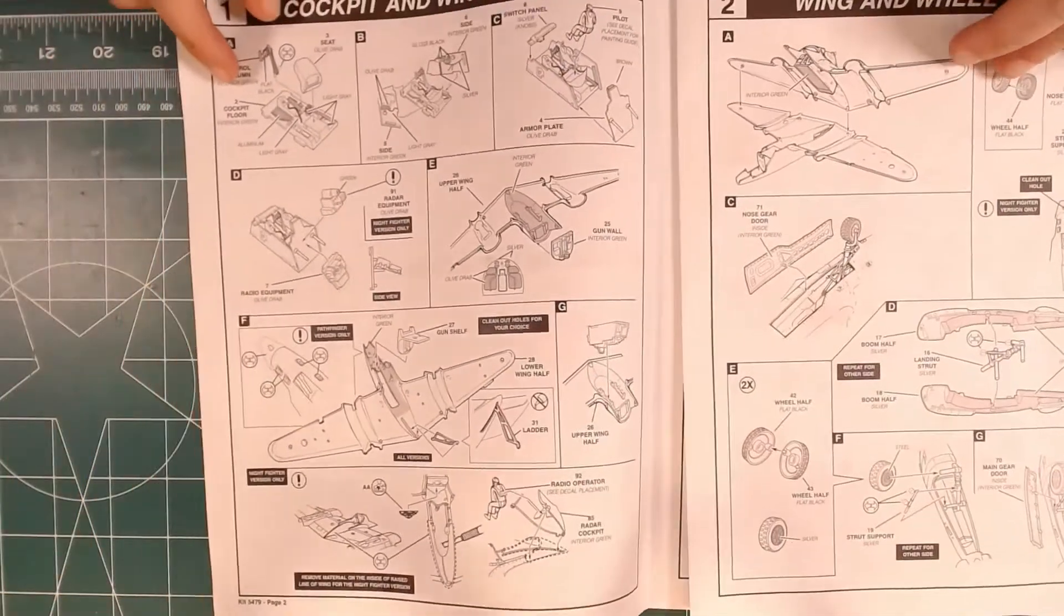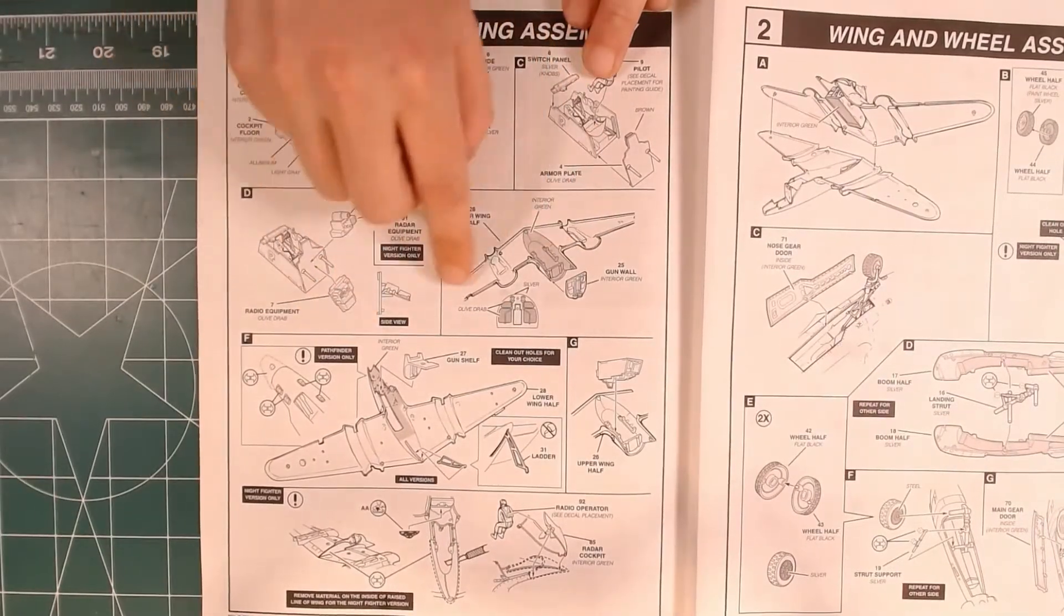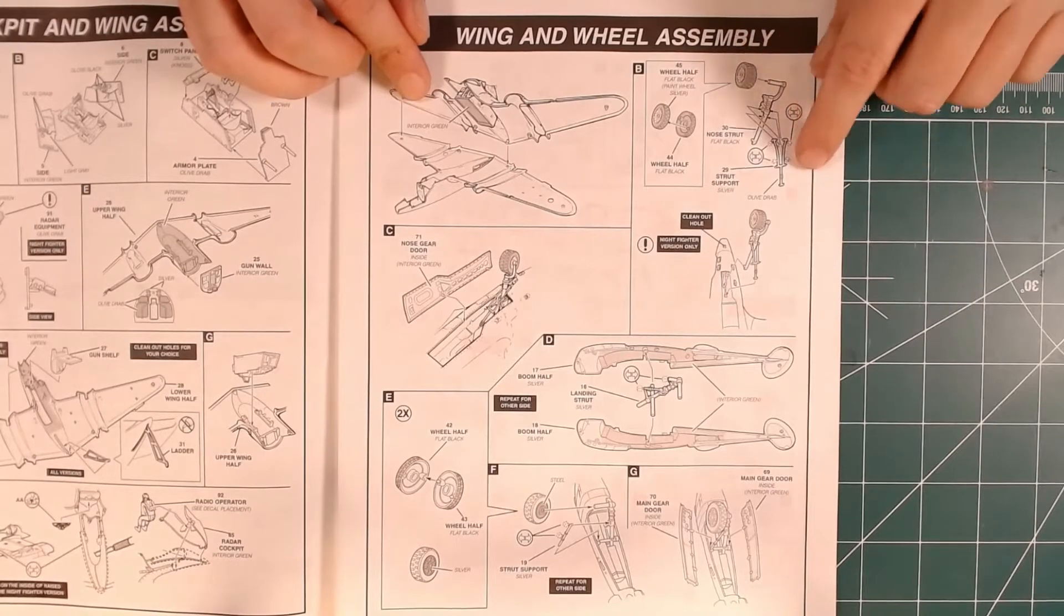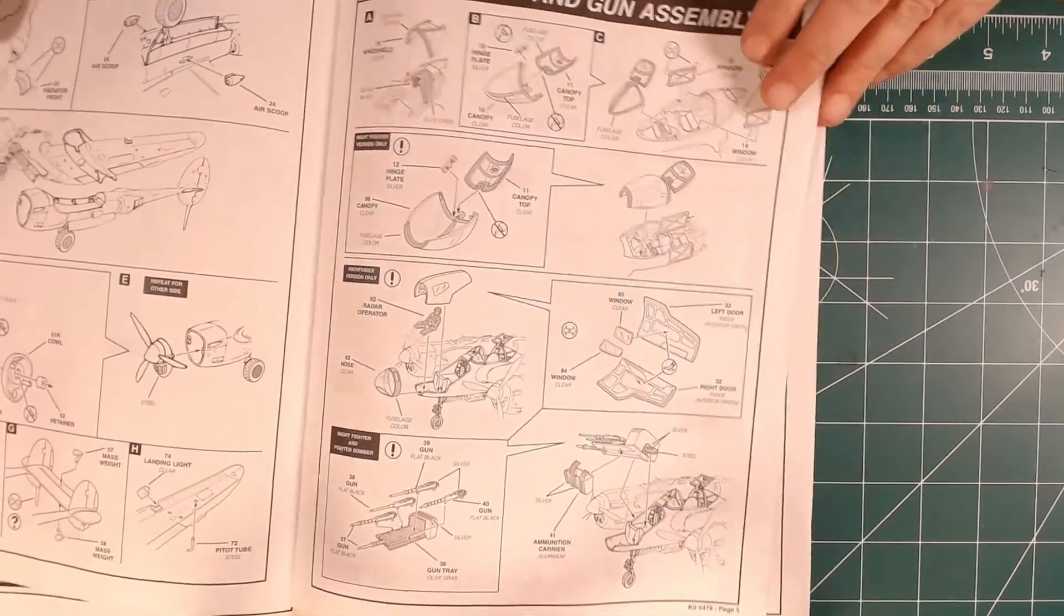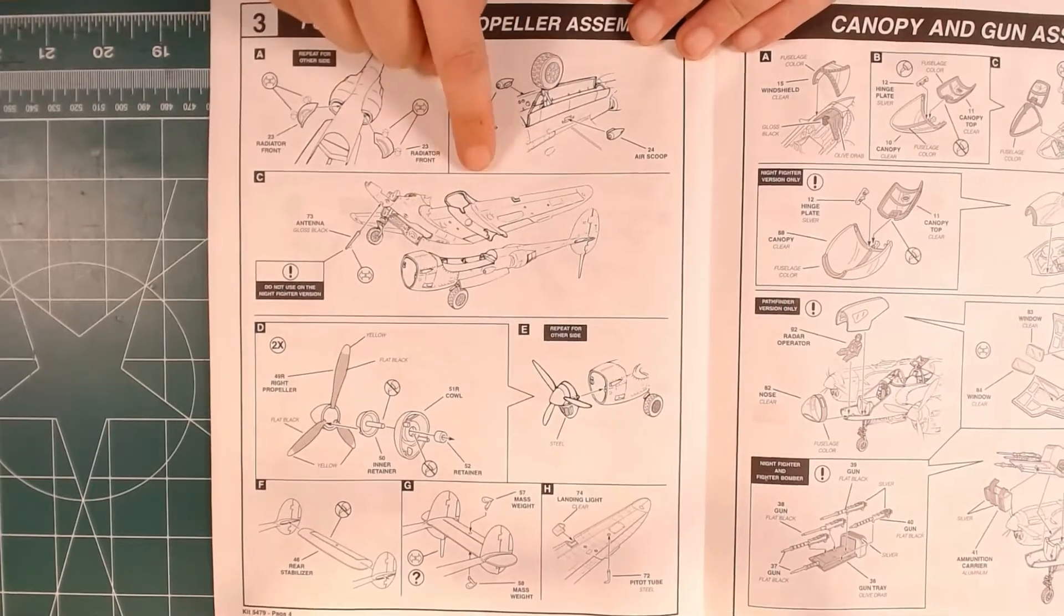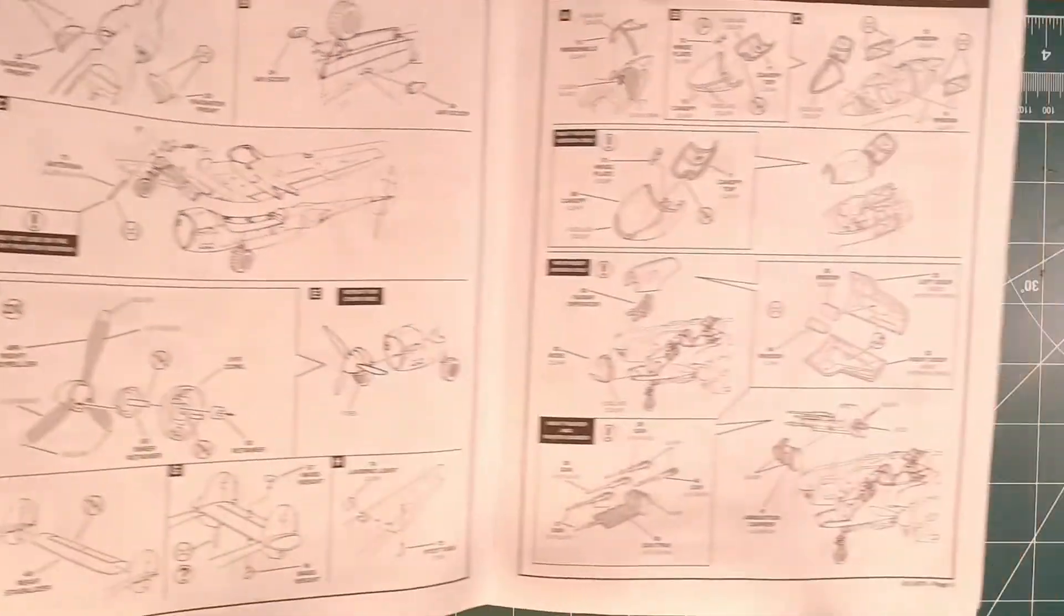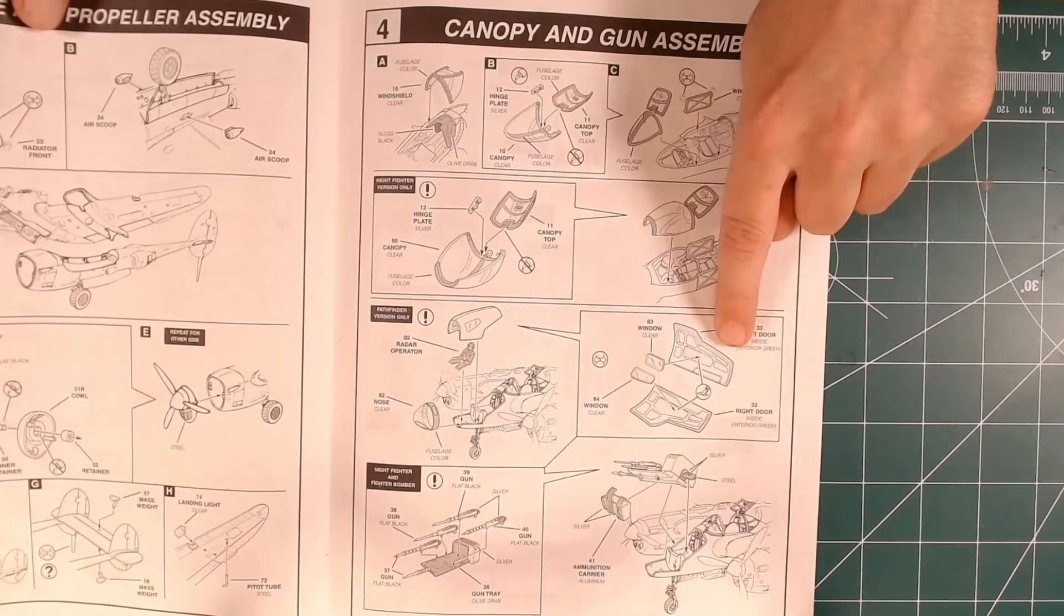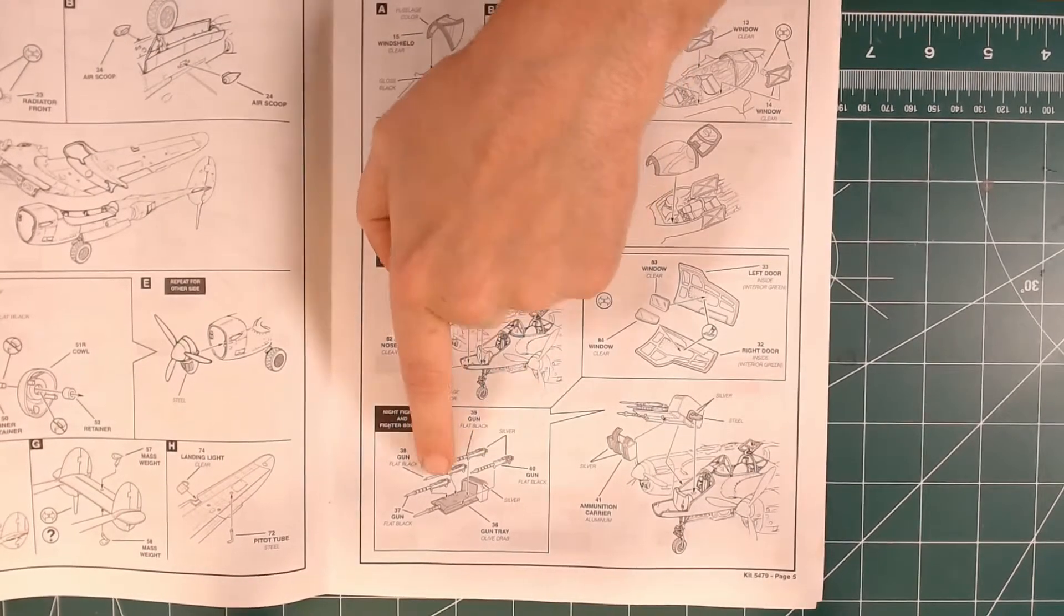So first page, build the cockpit, some interior parts on the wing, ladder, and we join the wing together. Landing gear, the booms. There's two booms. Tires. Some other more fuselage parts. Attach the booms to the wing. Propellers. Tail section. Cockpit canopies. The gun covers. The actual gun platform. It's 4 .50 caliber machine guns and a 20-millimeter cannon.